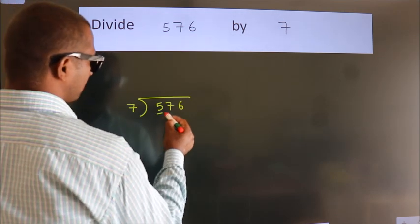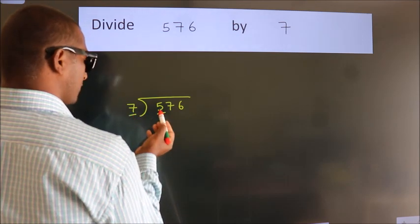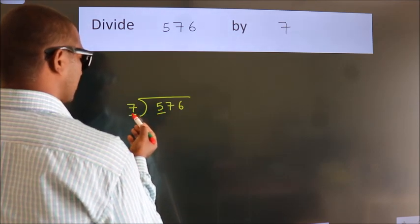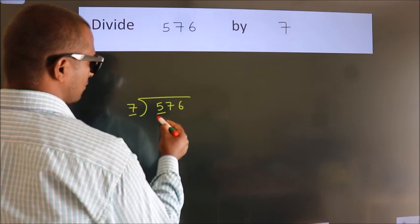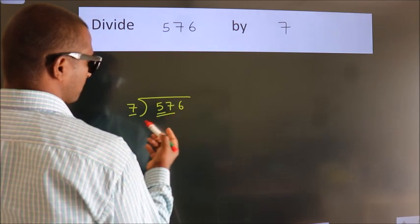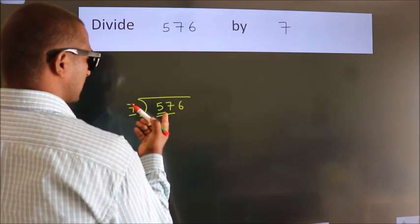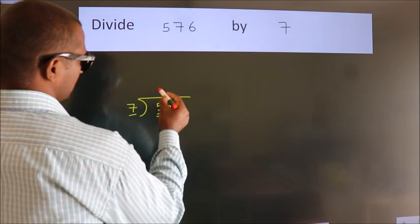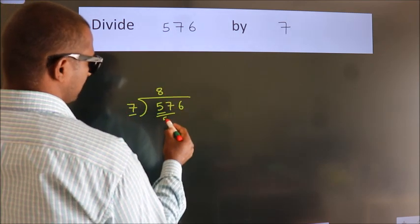Here we have 5. Here 7. 5 is smaller than 7. So we should take two numbers, 57. A number close to 57 in the 7 table is 7 times 8 is 56.